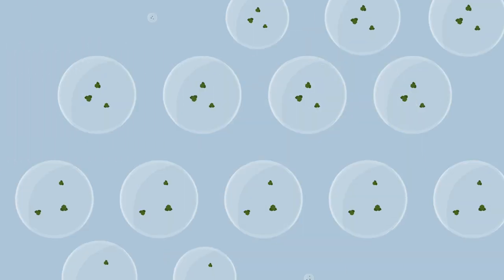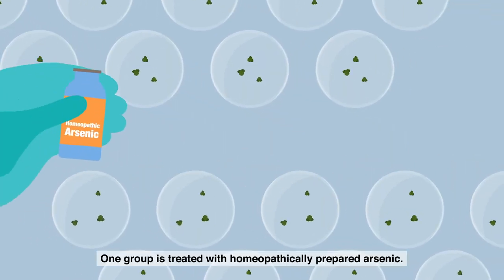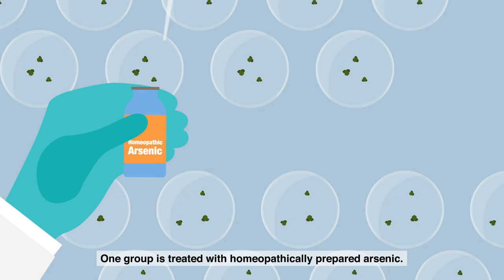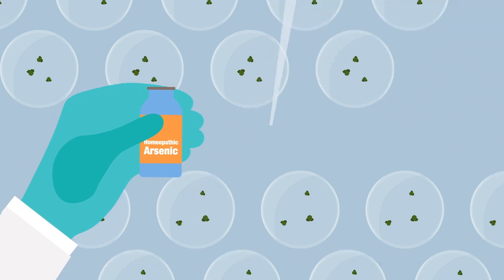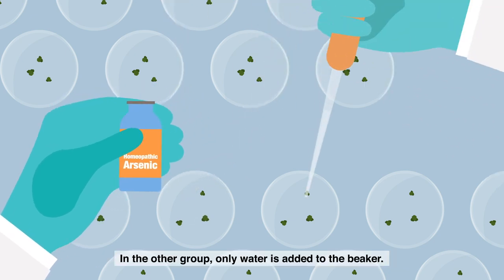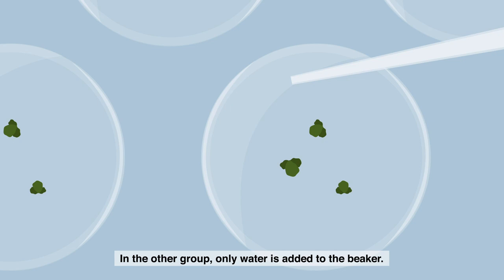Then, two test groups are formed. One group is treated with homeopathically prepared arsenic. In the other group, only water is added to the beaker.